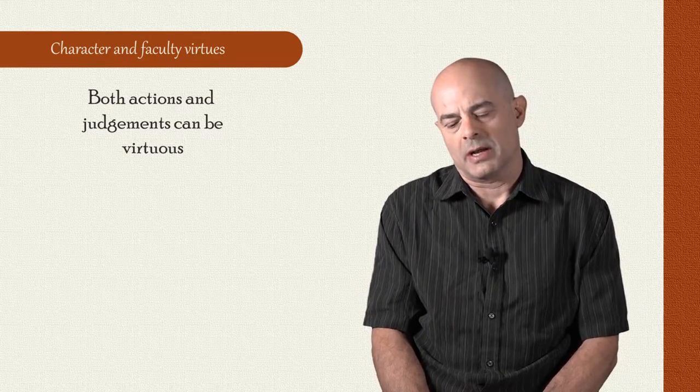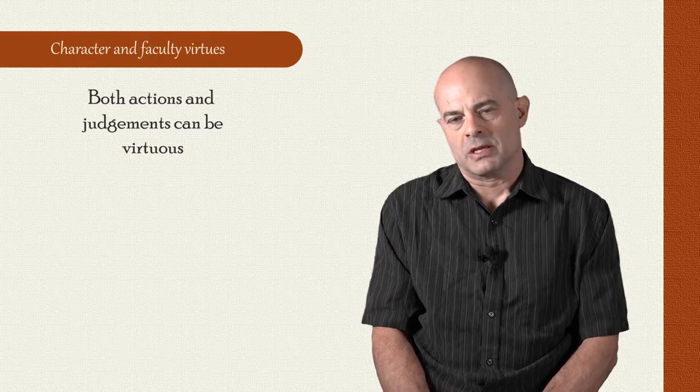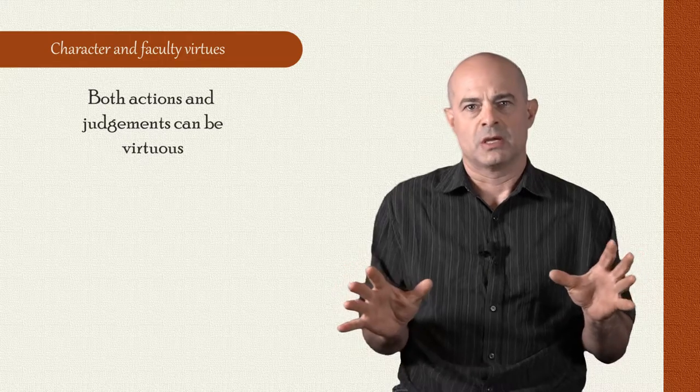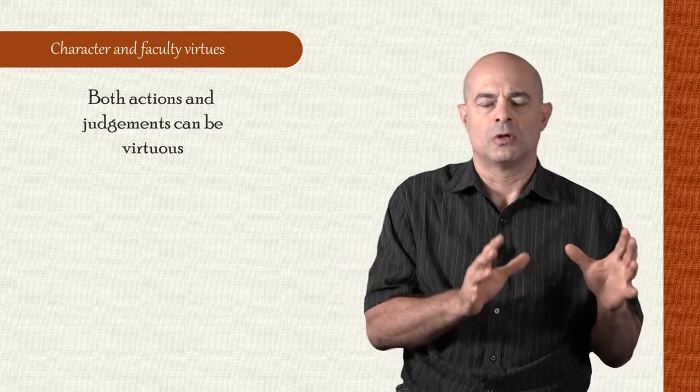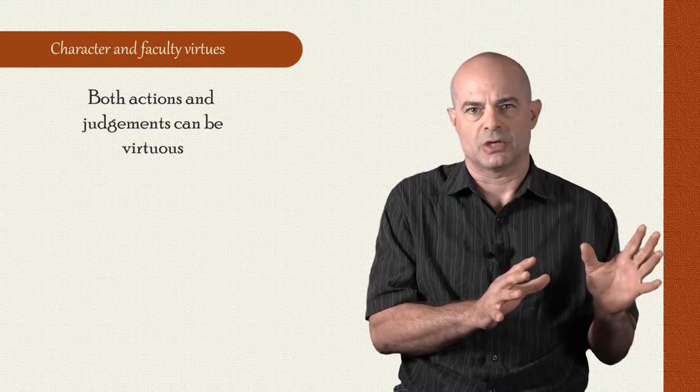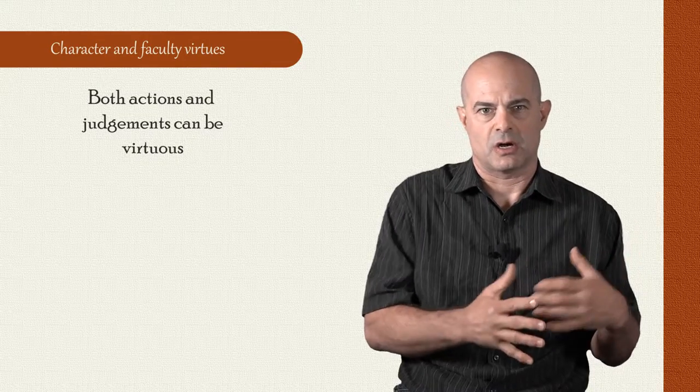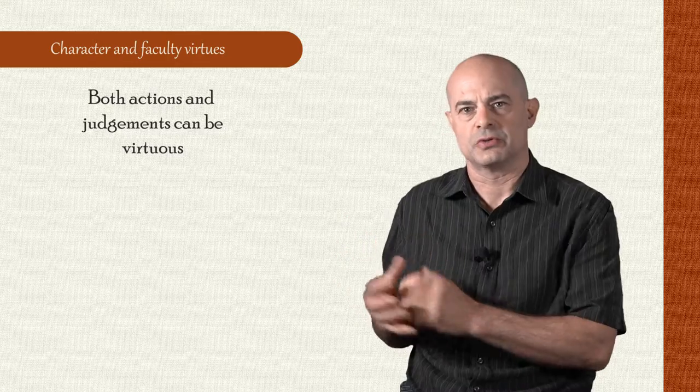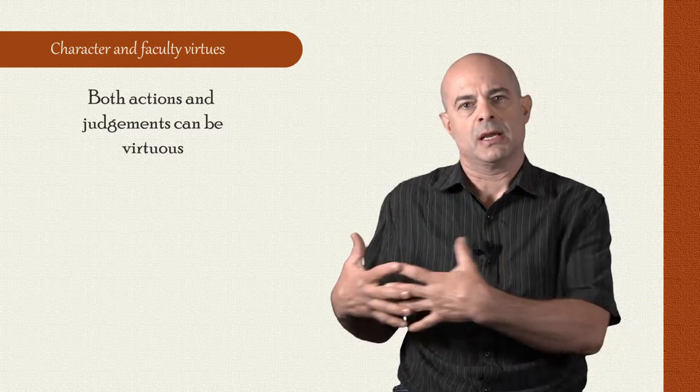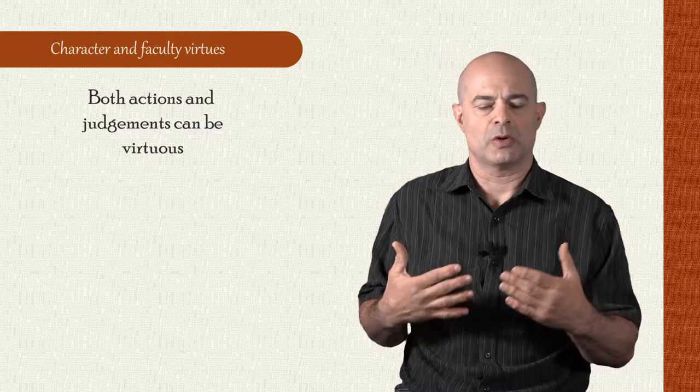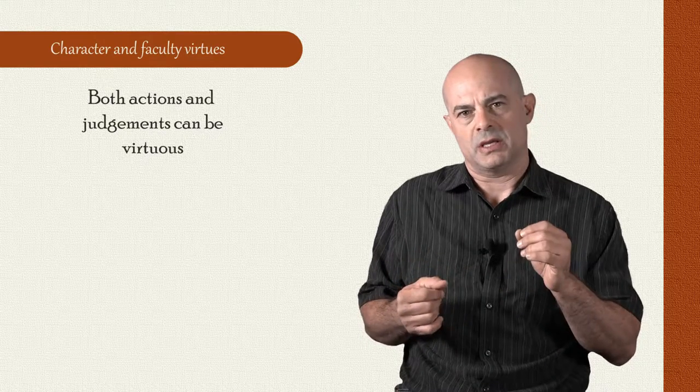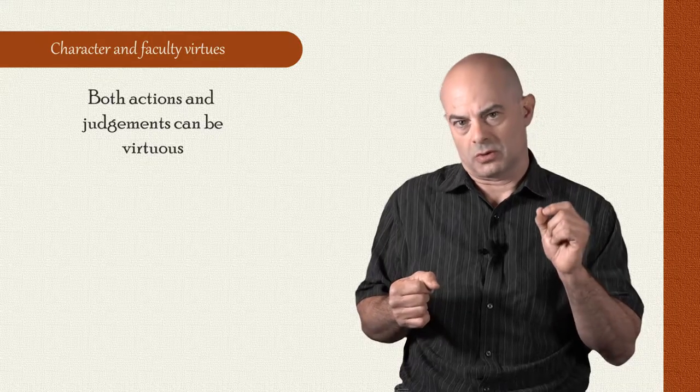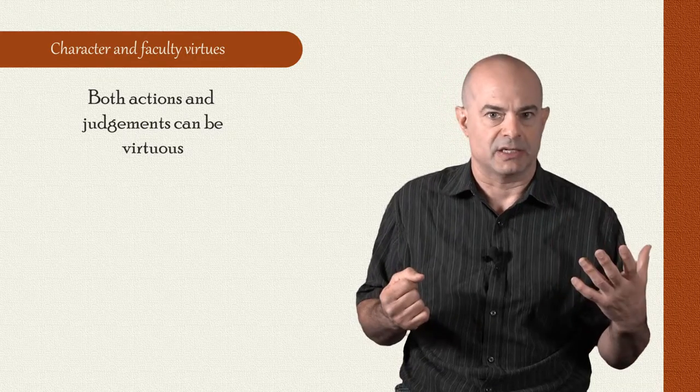On Aristotle's view, there were two categories of virtue. There were, on the one hand, moral or practical virtues, which are excellences regarding action, and then, on the other hand, there were intellectual virtues or excellences regarding thinking and judgment. It's important to note here that the Greek word that we're translating as virtue really could also be translated as excellence.